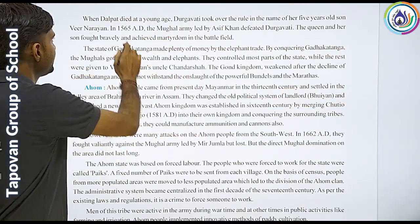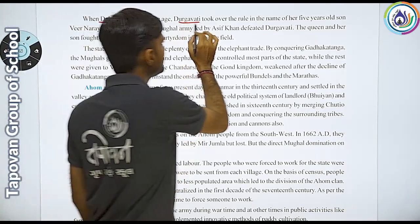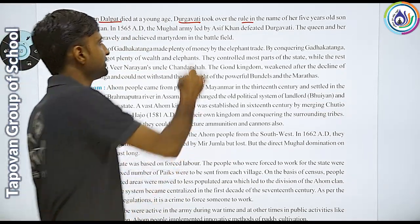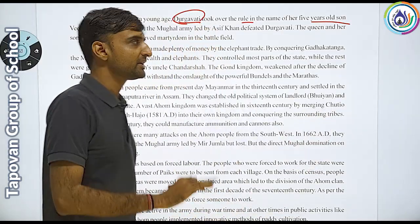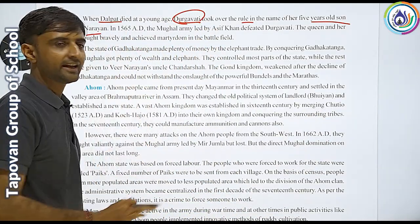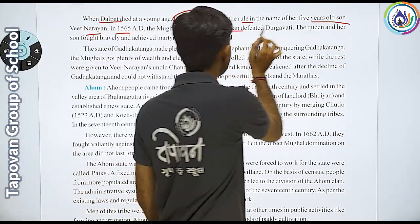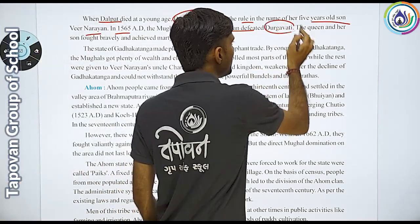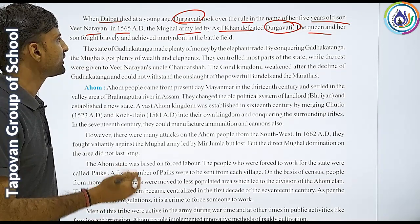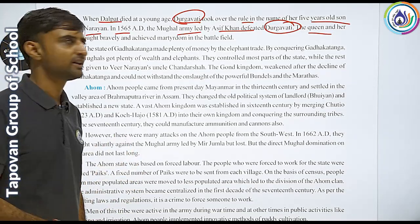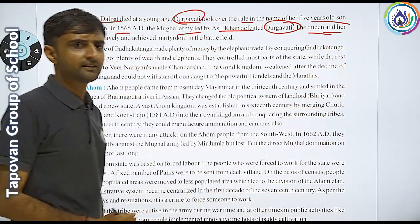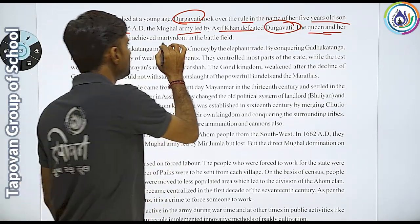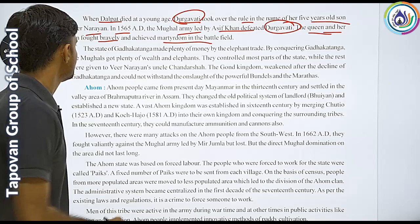When Dalpat died at a young age, Durgavati took over the rule in the name of her five-year-old son Veer Narayan. In 1565, Asif Khan of the Mughal army attacked and defeated Durgavati. The queen and her son fought bravely and achieved martyrdom in the battlefield.